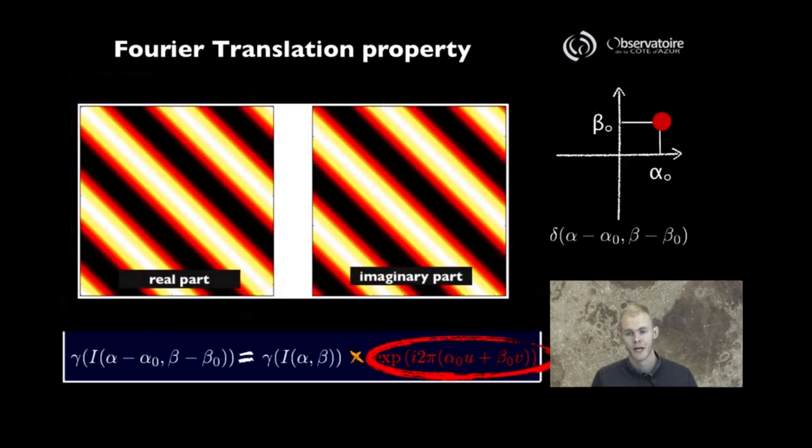That visibility is only modified by this exponential modulation, which introduces no changes to the amplitude itself, but adds some phase modulation. Here I'm representing the real and imaginary parts of that complex exponential modulation.